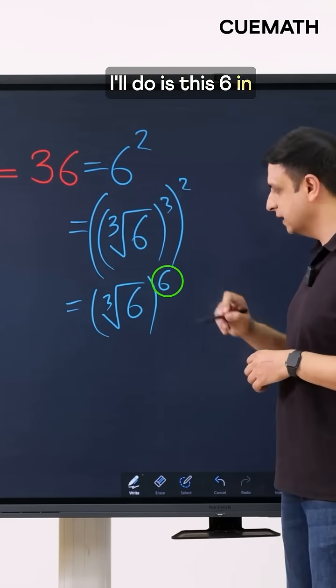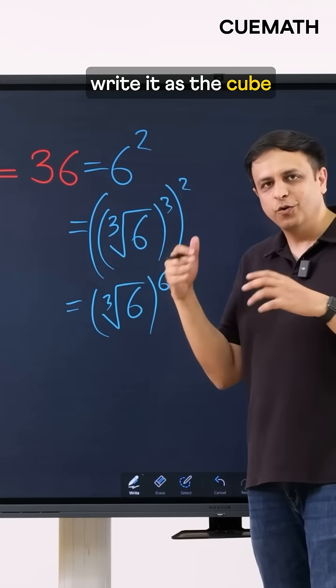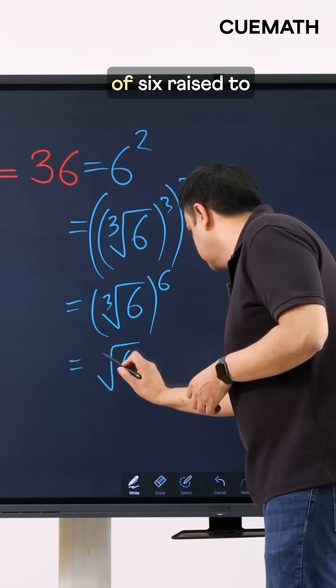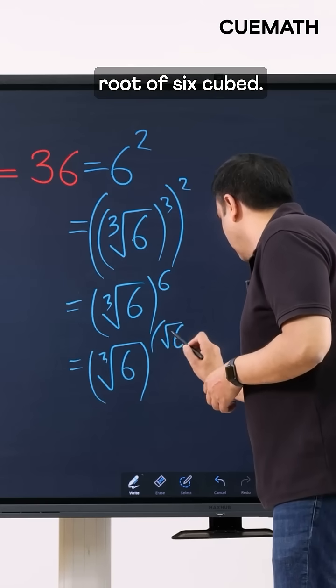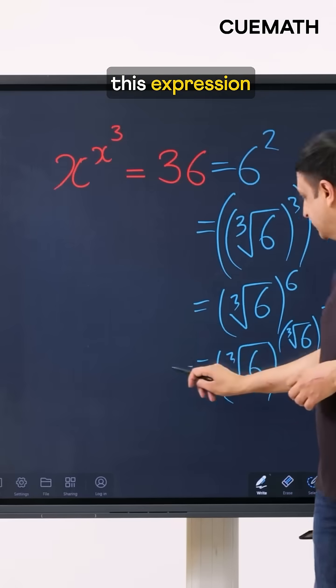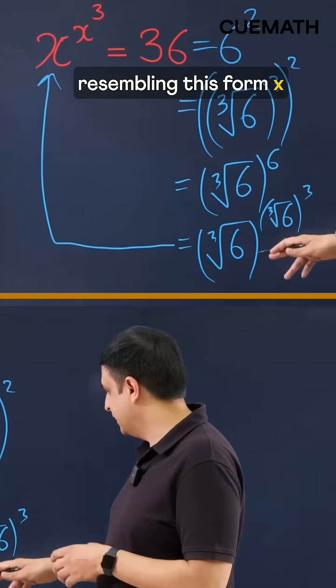And now finally what I'll do is this 6 in the exponent I will write it as the cube root of 6 cubed. So I'll write this as the cube root of 6 raised to the power the cube root of 6 cubed and now I finally have this expression resembling this form x to the power x to the power 3.